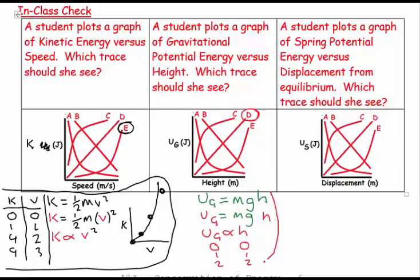Let's put this in a box so that I don't get confused. And then let's look at our last one. The last one says a student plots a graph of spring potential energy versus displacement from equilibrium. Which trace should she see?